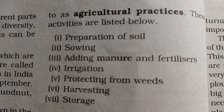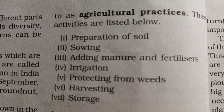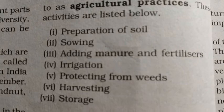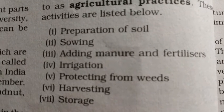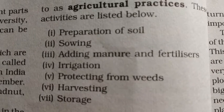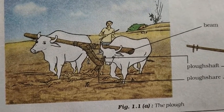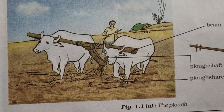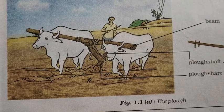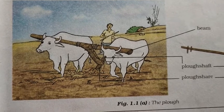The agricultural practices include: preparation of soil, adding manure and fertilizers, irrigation, protecting from weeds, harvesting, and storage. These are the main activities carried out to grow the best quality and quantity of crops.